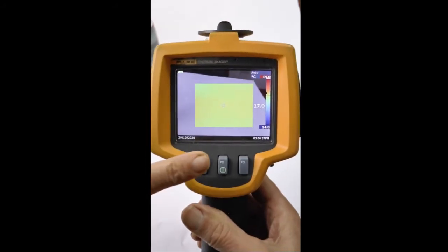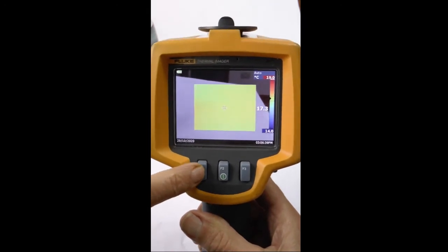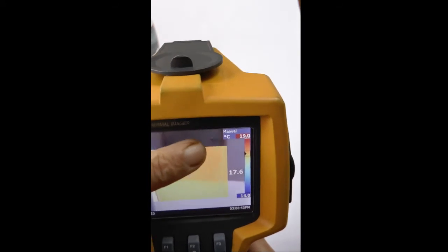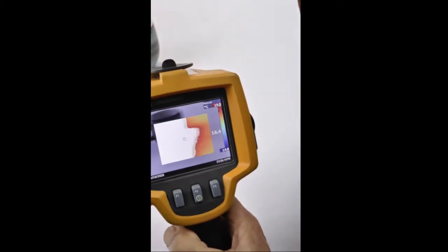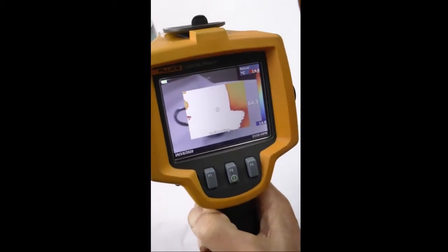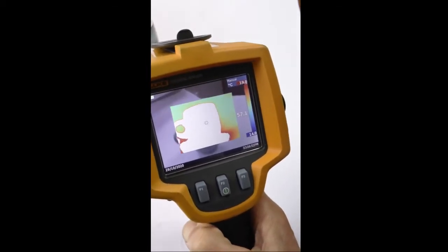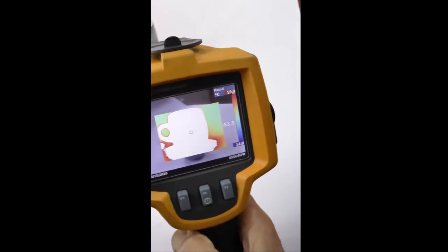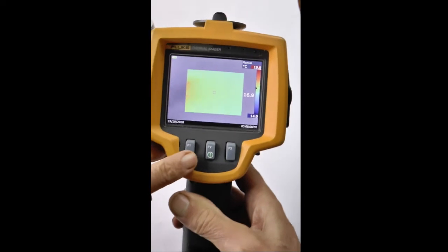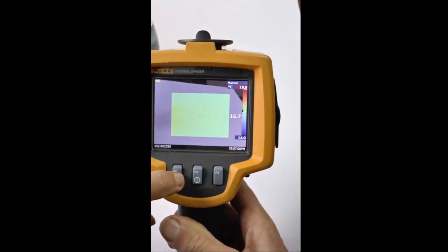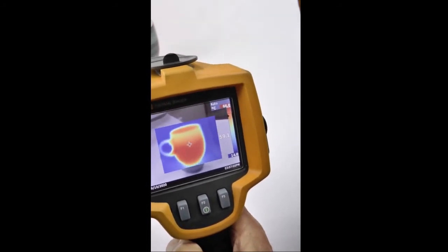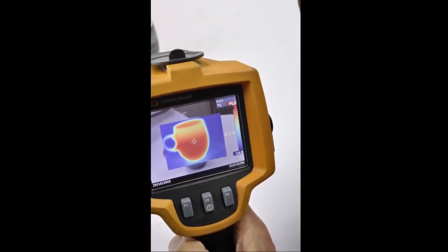You can change to manual by holding this left-hand F1 button, and then it says manual. You'll see when I look at my cup of tea, it's all a bit different. Most of it is too hot to scale. If I hold F1 again, I can turn it back to auto, and now we've got the normal image back again.